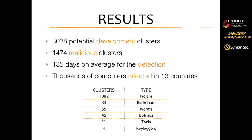Once we ran our classifier on the whole dataset, we obtained more than 3,000 clusters as potential development, with roughly 50% considered malicious — meaning at least one sample is known by antivirus companies. These malicious clusters are detected on average in the wild by antivirus companies after more than 100 days, and these malwares have been detected on more than thousands of computers worldwide, ranging across malware families like Trojans, Backdoors, and Keyloggers.